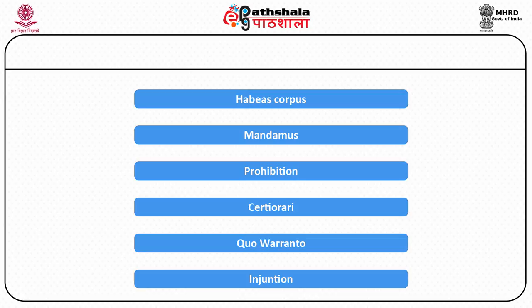Certiorari literally means 'to be certified.' It is issued by the higher court to a lower court for transferring records or proceedings of a case to determine the legality of its proceedings. Like prohibition, it can be issued only against judicial and quasi-judicial authorities, not against administrative authorities.